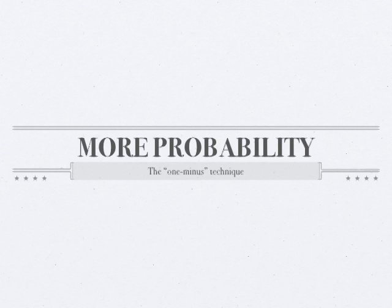And here we go again. This is the first in a more advanced probability video series, which we're calling More Probability. And this is about the one minus technique, which you will find out about by the end of this little video nugget. Here we go.